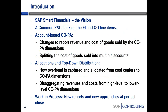I'll start with the vision where we came from when we started on the journey for smart financials. Then I'll come to a topic that most of you, if you've come from a legacy system or anywhere else, have maybe struggled with in our existing SAP system: how do you get a common profit and loss statement that not only looks at the FI side of the house, but also at the CO side of the house.